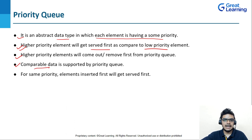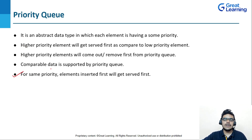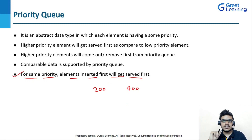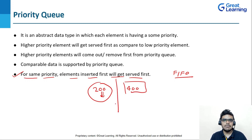Comparable data is supported by a priority queue, meaning whatever data you insert must be able to follow either ascending or descending order. For elements with the same priority, the one inserted first will get served first. For example, if data elements 200 and 400 have the same priority but 200 is inserted first, then 200 will be served first — following FIFO (first in, first out) order.